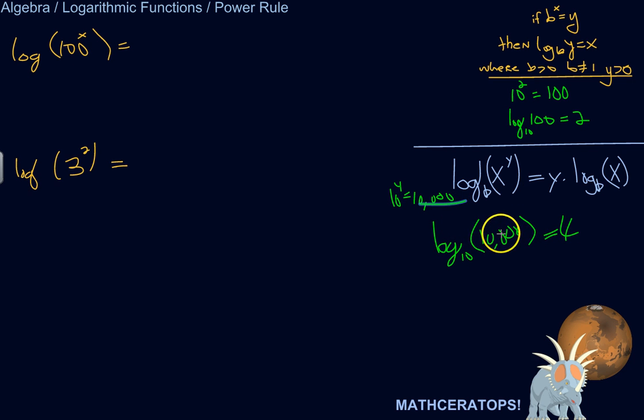Well, I could rewrite 10,000 as 100 squared, right? 100 times 100 is 10,000. So I could do log base 10 of 100 squared.